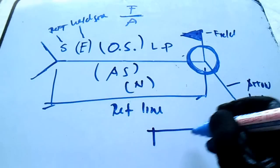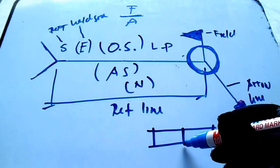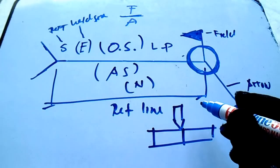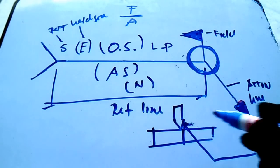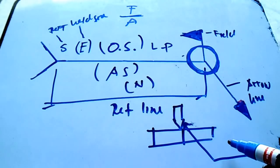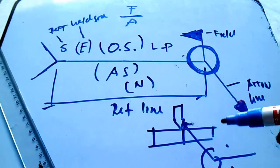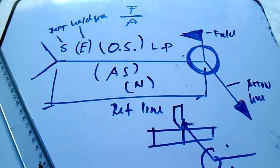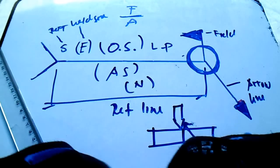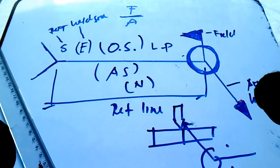I will draw an example. Here is a specimen with a bevel. If you see the symbol, it shows the other side and arrow side, meaning weld all around. The flag here is the field weld symbol. That's all for now — these are very important symbols. Don't forget to subscribe, leave a comment, and thanks for watching. See you next time, bye.